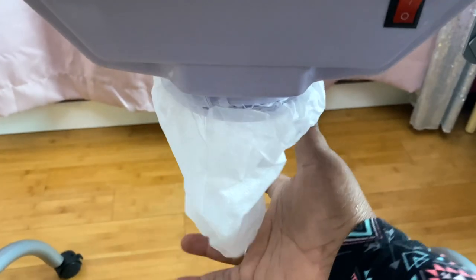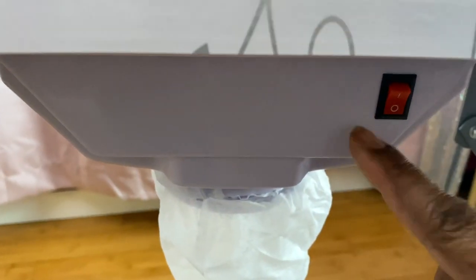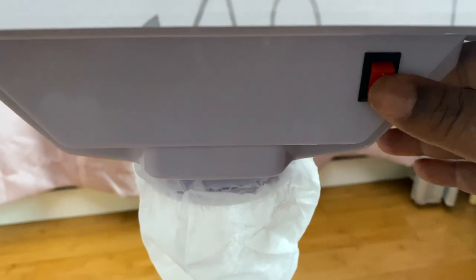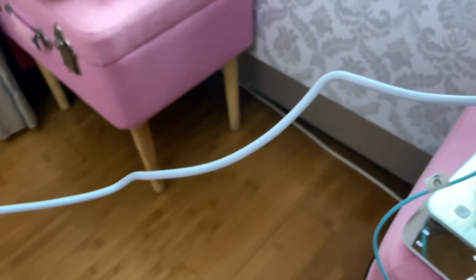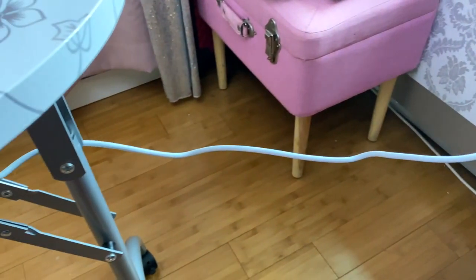Down below we have the bag to catch all of the nail debris from your acrylics or gel when you're filing. Here we have the on and off switch. I have seen these to be replaceable—I've seen them on Amazon and eBay. I have it plugged in now. The cord is honestly not very long.